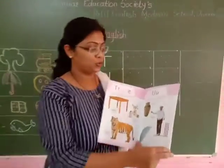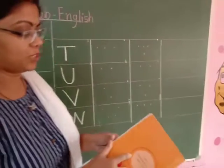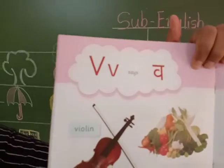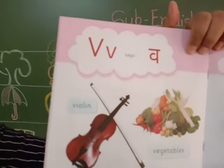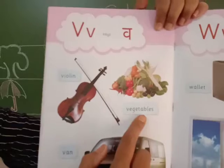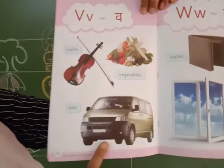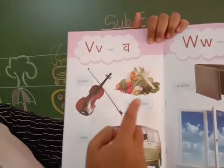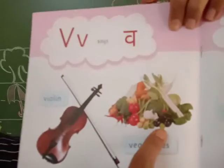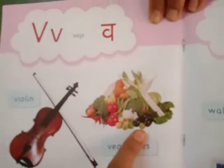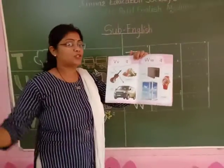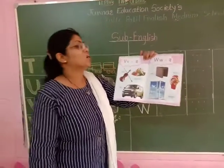Then after U, which letter will come? Come on, see here — Letter V! V says V, V says V. So: violet, vegetables, and van. You know all these pictures. See here, many many vegetables are here and you have to eat all vegetables. Vegetables keep you healthy and strong, okay?